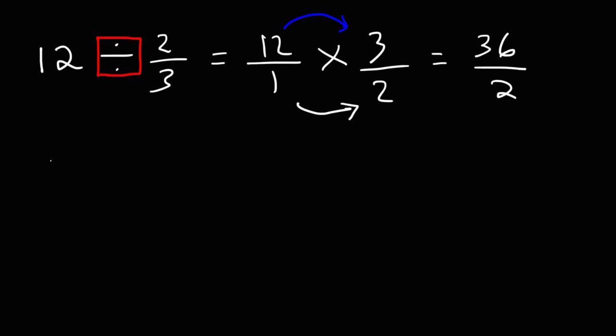Now we need to simplify. So we have 36 over 2. This is the same as 36 divided by 2. And half of 36 is 18. So that's the answer for this example.